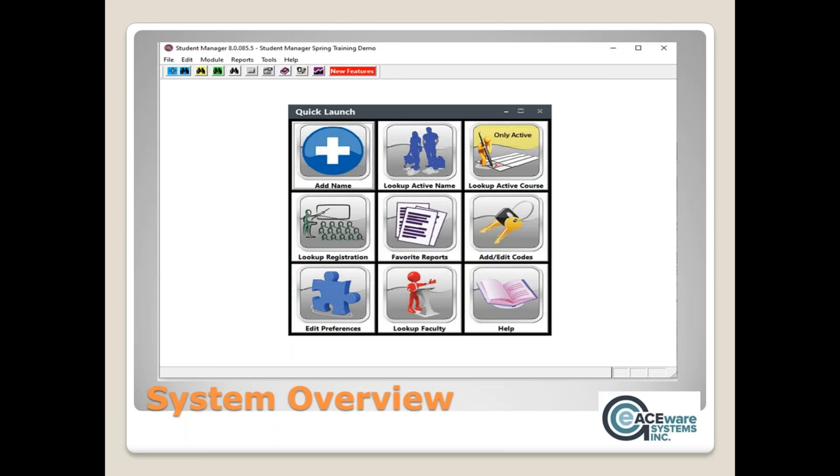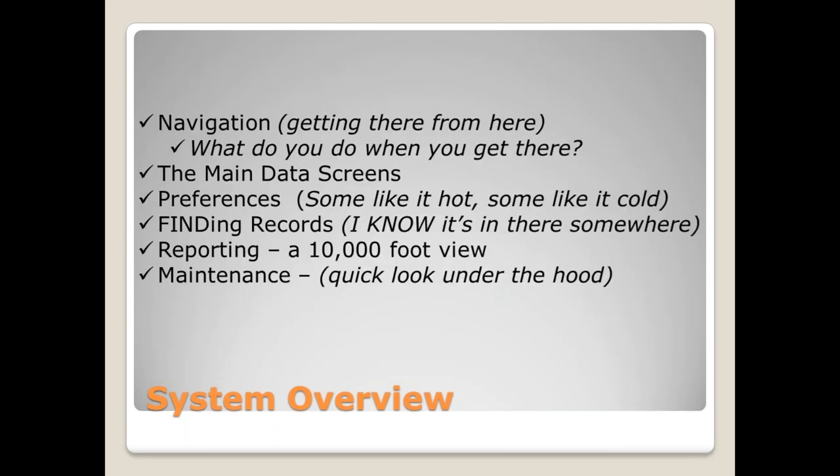First we'll do a system overview covering navigation and getting around the screens. We'll review the primary data screens and cover preferences — you may not have permission to edit yours, but know they exist. If you're in a large organization and see a preference that would help, let your administrator know. We'll also look at finding records, a quick view on reporting, and a quick look at maintenance. Reporting will go deeper in a follow-up session in a couple of weeks.